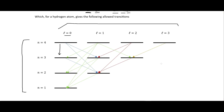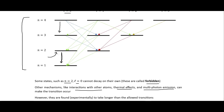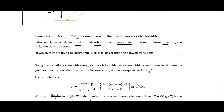Some states, such as n=2, l=0, don't have any allowed decay path and are called 'forbidden,' though that is a misnomer — transitions can occur via interactions with other atoms, thermal effects, or multi-photon emission, but experimentally they take longer. For example, the n=2, l=0 to n=1, l=0 transition does occur but takes longer than allowed transitions.